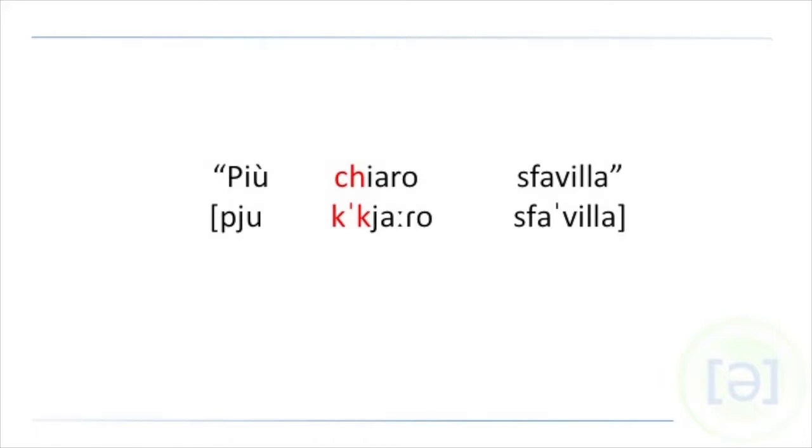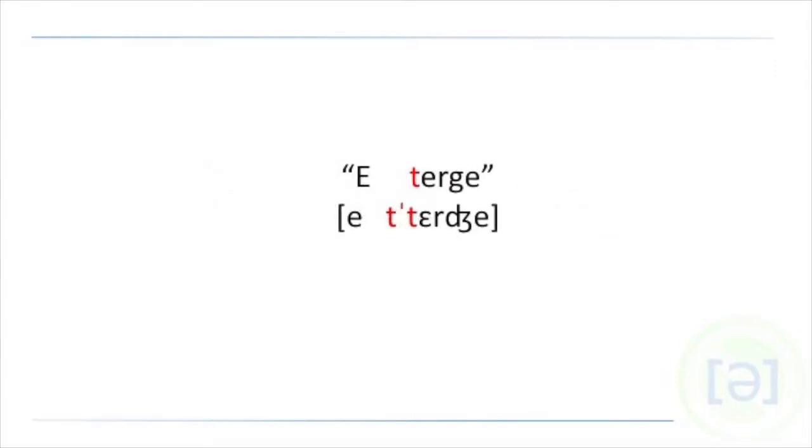We have these two phrasal doublings in the first verse. After più, as well as già, we have raddoppiamento sintattico, so we double the consonant that follows. In this case, più chiaro. Also in e terge, the T is a little stronger because after the word E we can always double the consonant.